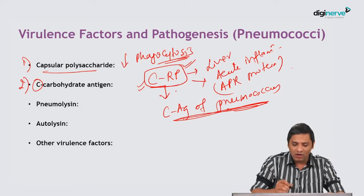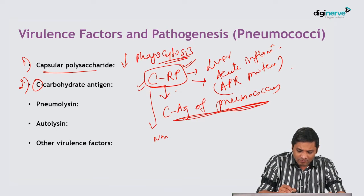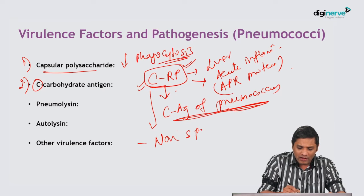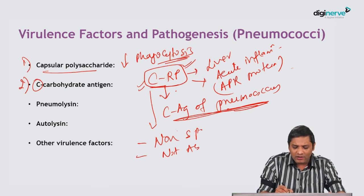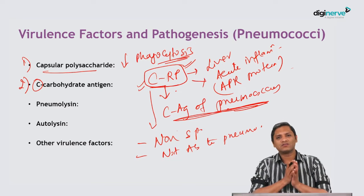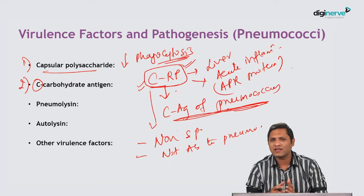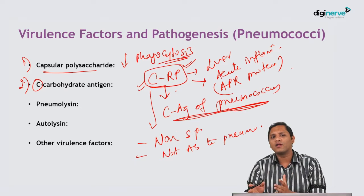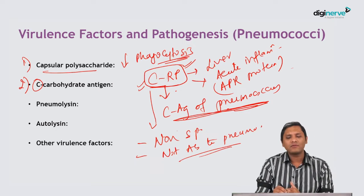However, C-reactive protein is a non-specific protein. It is neither an antibody to pneumococcal antigen. It can be raised against any infection and inflammation including pneumococcal pneumonia, and it is not an antibody against pneumococcus. It is just called CRP because it reacts with the C antigen.